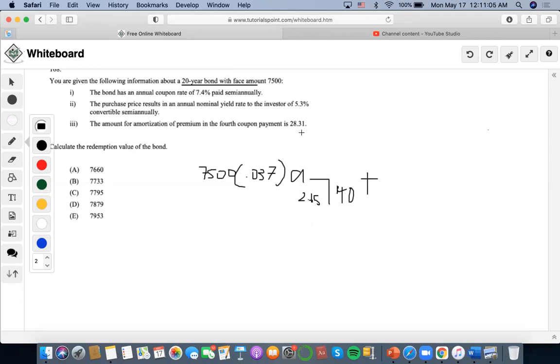that would mean that the premium from the time prior, or the coupon prior, caused the premium to be $28.31. So that means we would have to find the pricing of the bond after the third coupon. So after the third coupon it would be $7,500 times 0.037...